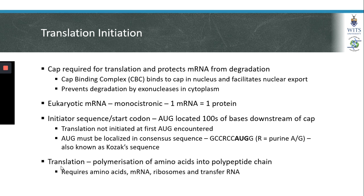The process of translation is dependent on a host of proteins; however, the essential players are amino acids, mRNAs, ribosomes, and transfer RNA. Since we already know what amino acids are and we've discussed mRNA in detail, we will now talk about the structure of ribosomes and transfer RNA.